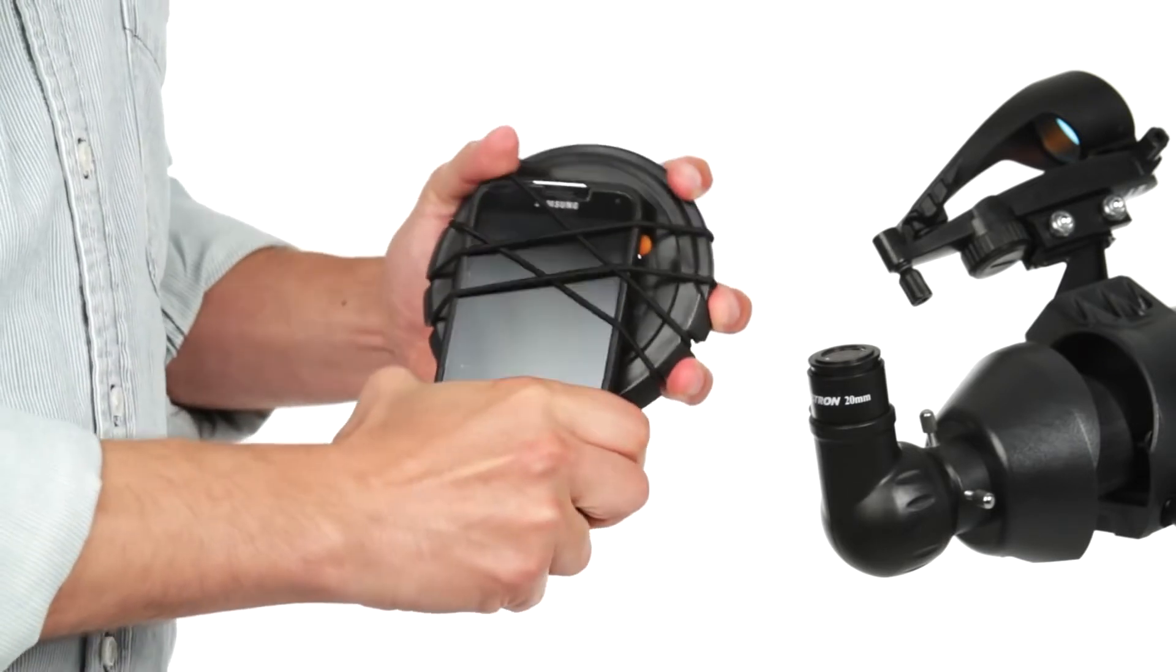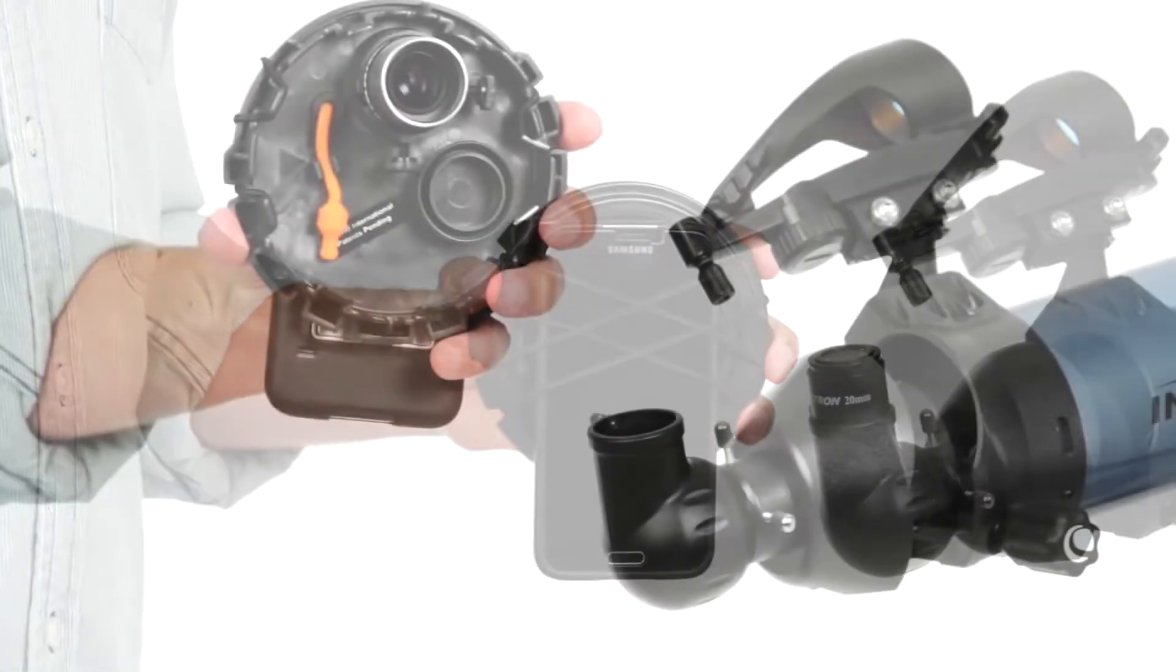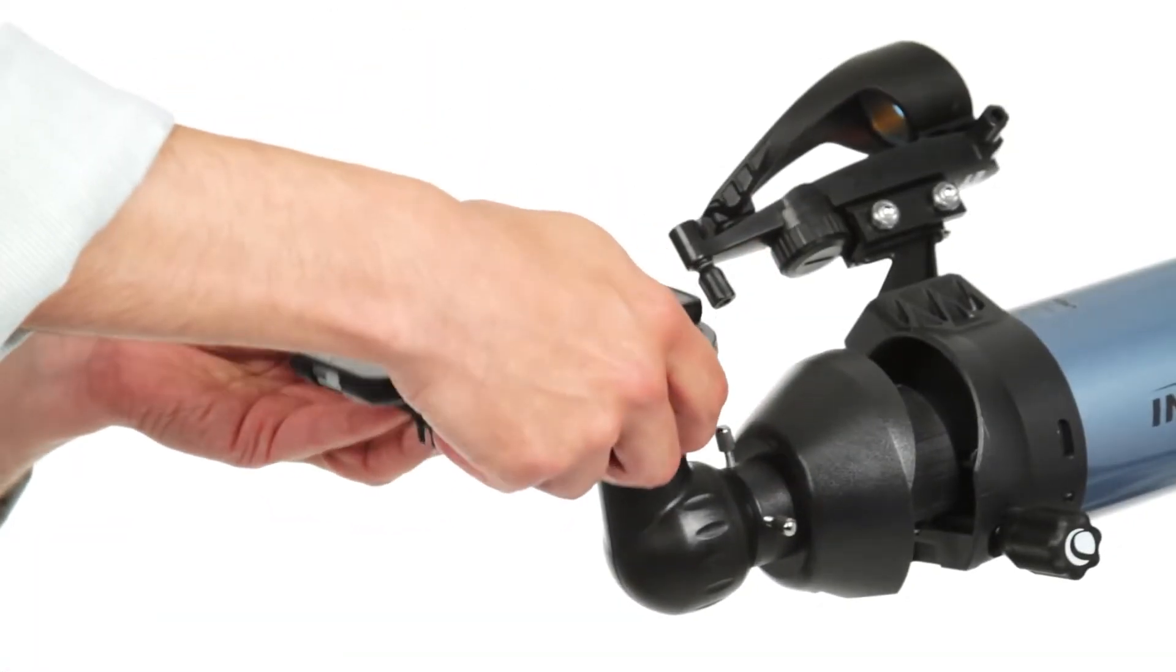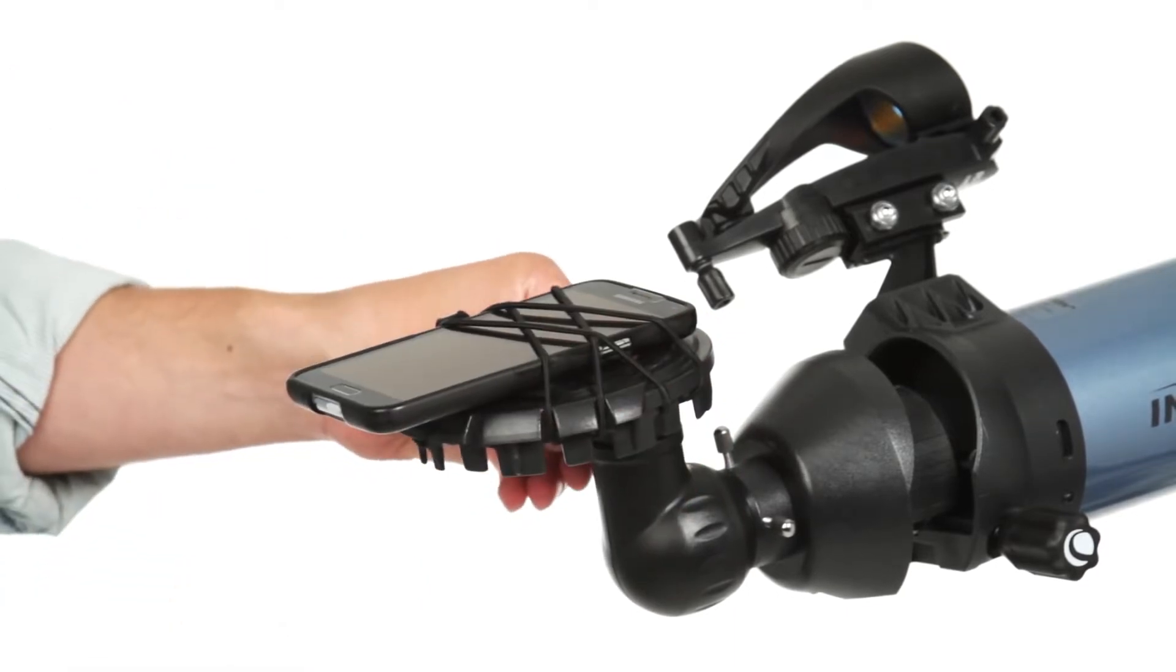The inside of the lens cap has a fitting that secures to your eyepiece using two set screws, and voila! You are now ready to take high-power images through the telescope.